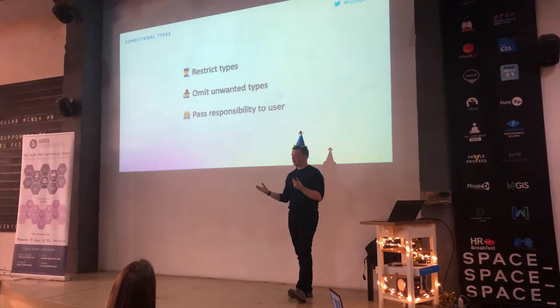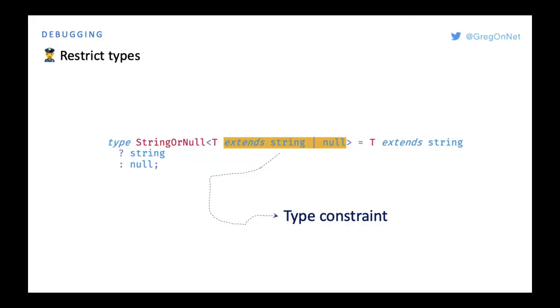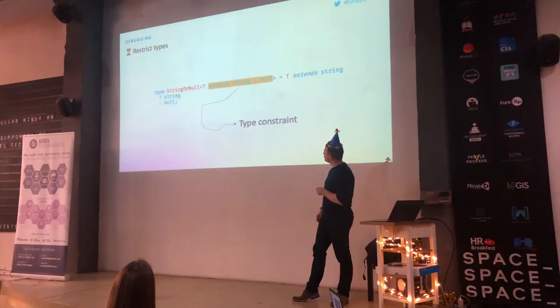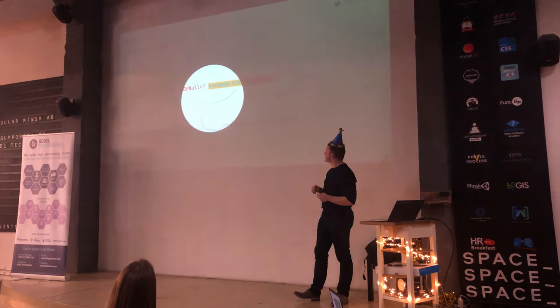The developer using your API just needs to check if the type they want is valid or not. You can use type constraints since generics were introduced, by adding that T should extend a string or null value — this is a type constraint you can use, for example.